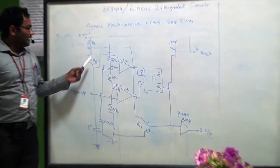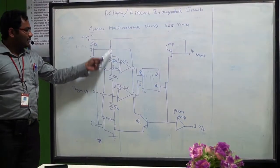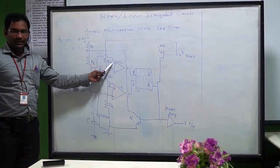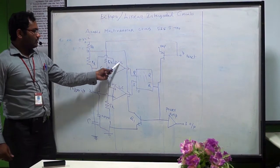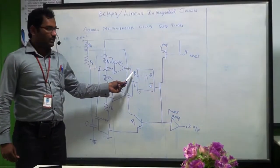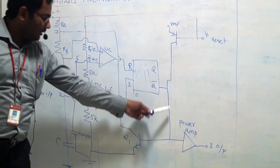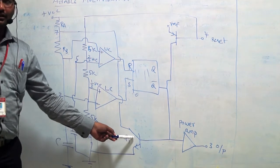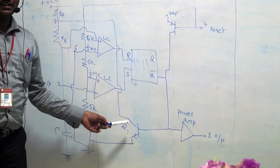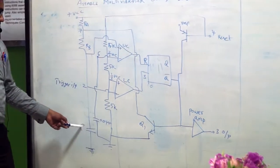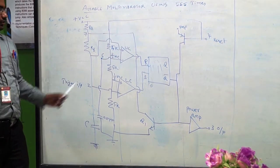When the voltage at pin number 7 is greater than 2/3 Vcc, the upper comparator goes high. Upper comparator goes high means it resets the control flip-flop. Reset means Q equal to 0 and Q-bar equal to 1. Q-bar equal to 1 means transistor Q1 is on, and the output of the power amplifier is 0.